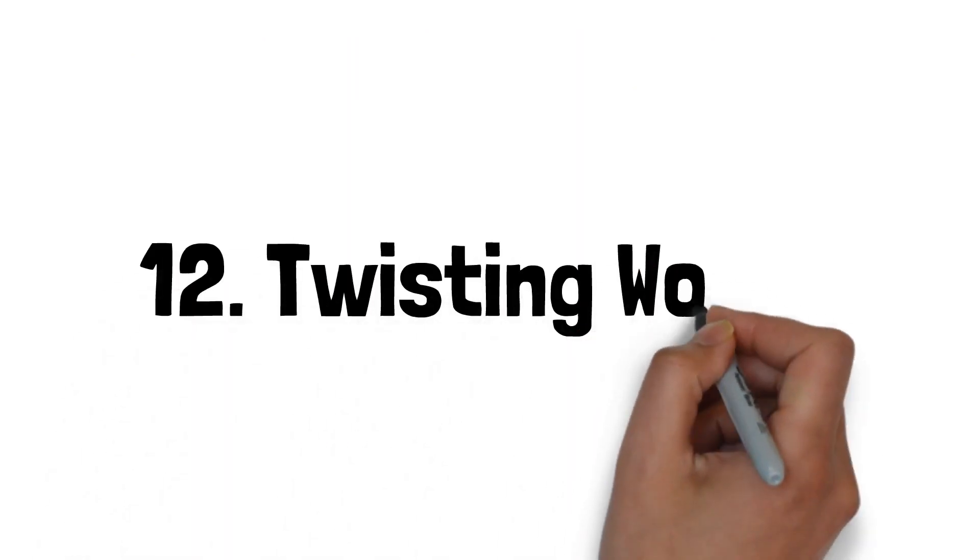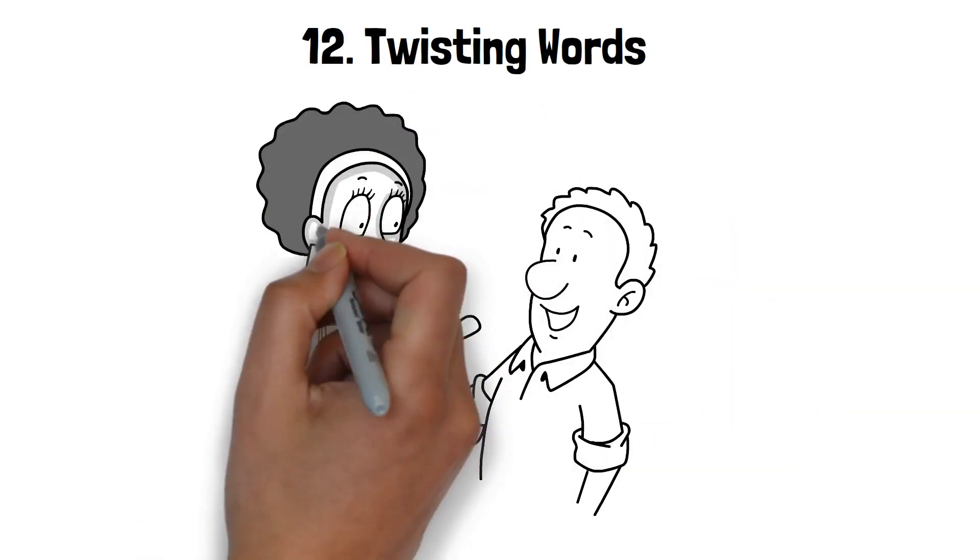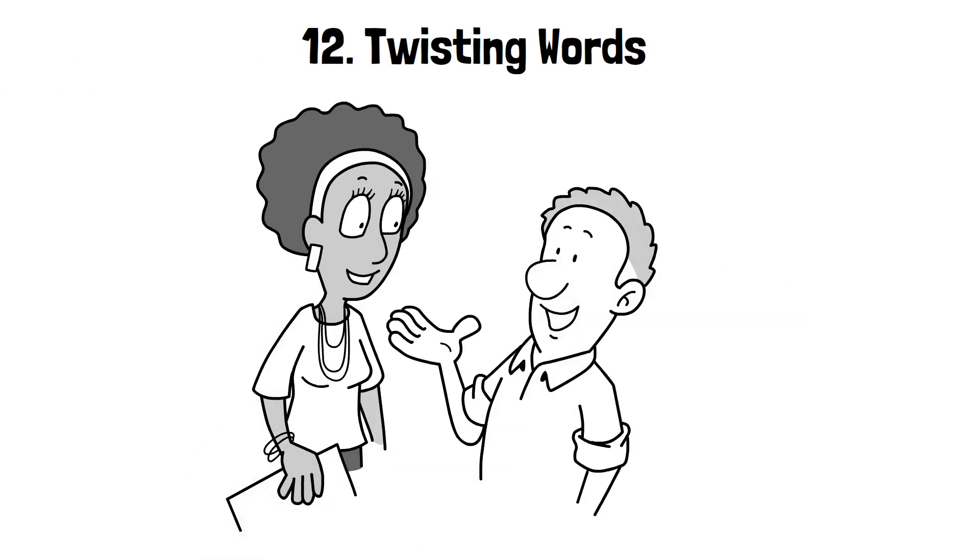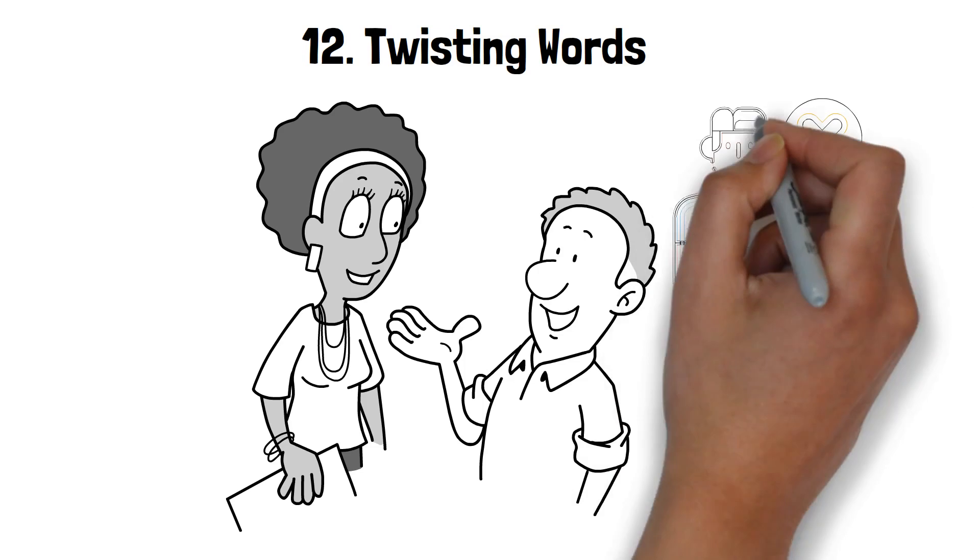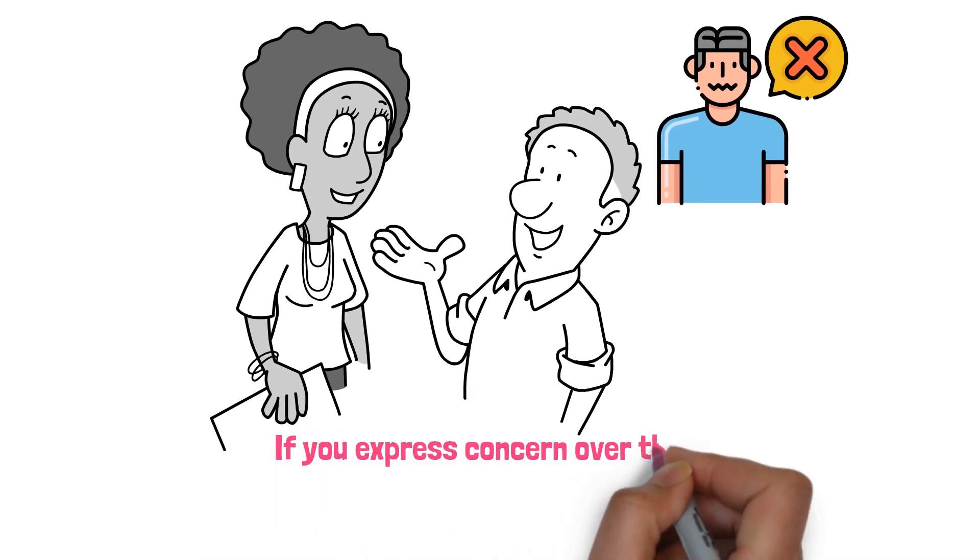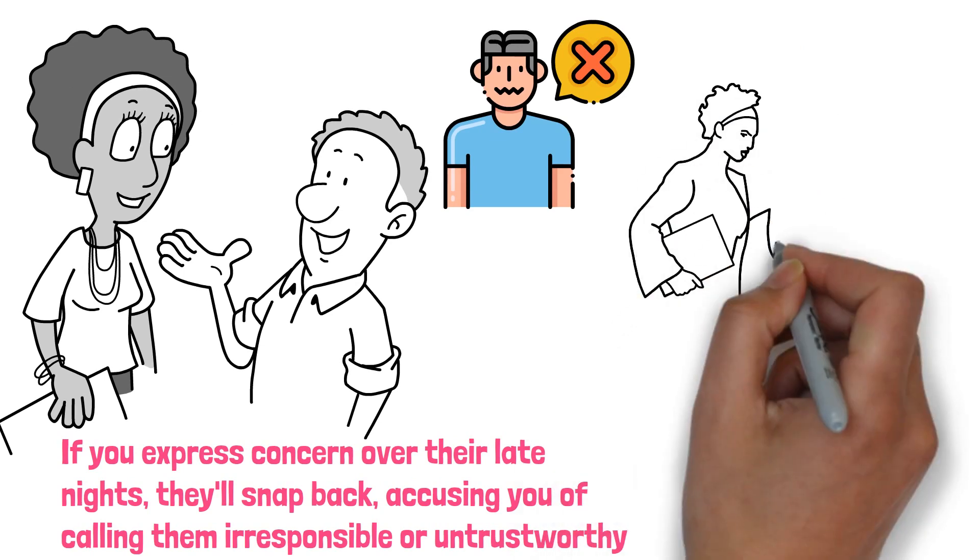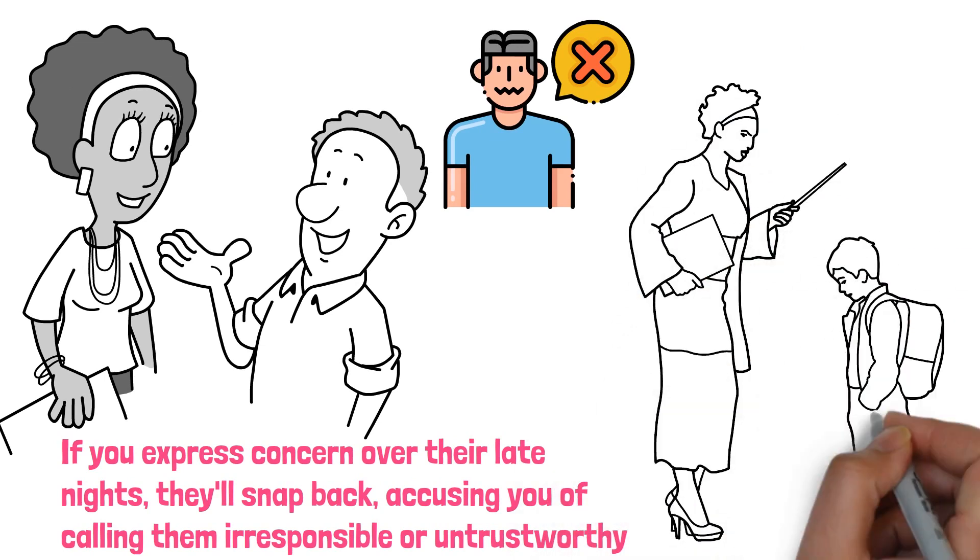12. Twisting words. A common maneuver of master manipulators is twisting words. You might say something, and they'll deliberately misconstrue it, making you feel like you've done something wrong. For instance, if you express concern over their late nights, they'll snap back, accusing you of calling them irresponsible or untrustworthy. They're adept at turning your words against you, leaving you constantly on the defensive.